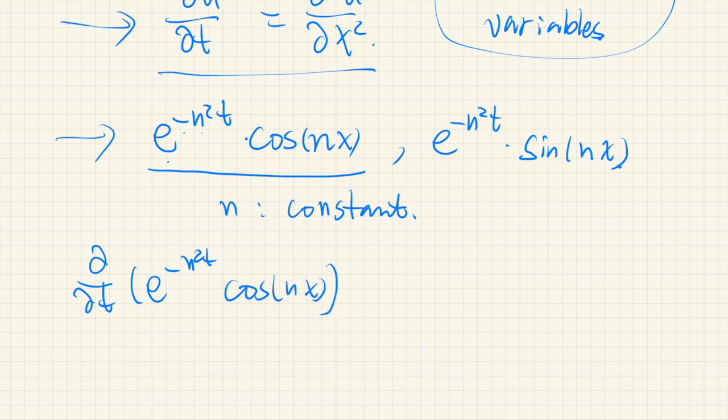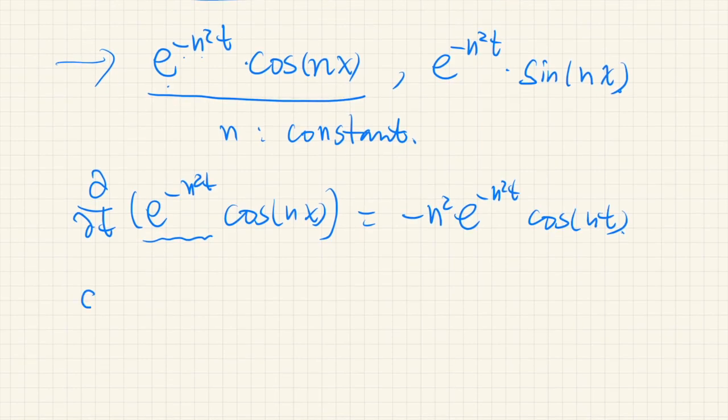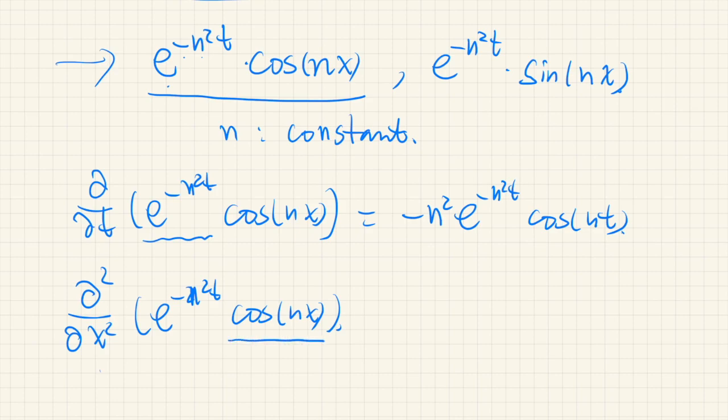And t appears only in this factor. So if you differentiate the same function twice with respect to x, n squared cosine nx. So x appears only in this factor. So if you differentiate cosine functions twice, you get negative cosine.